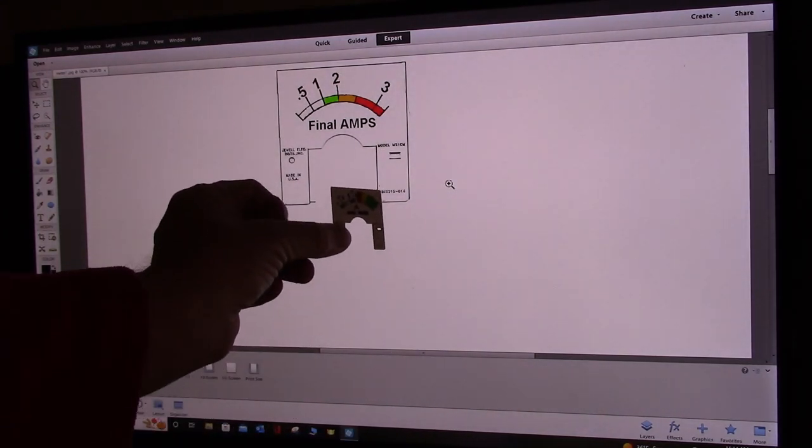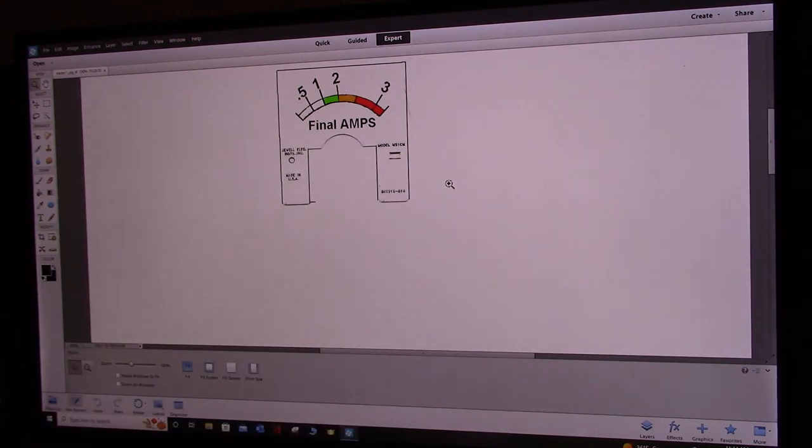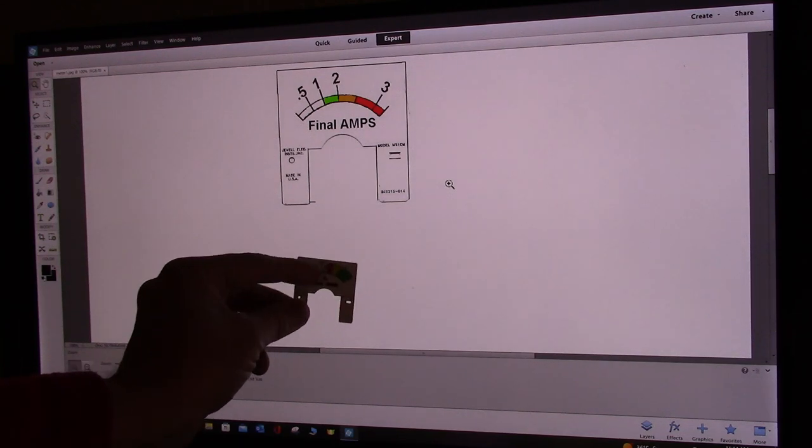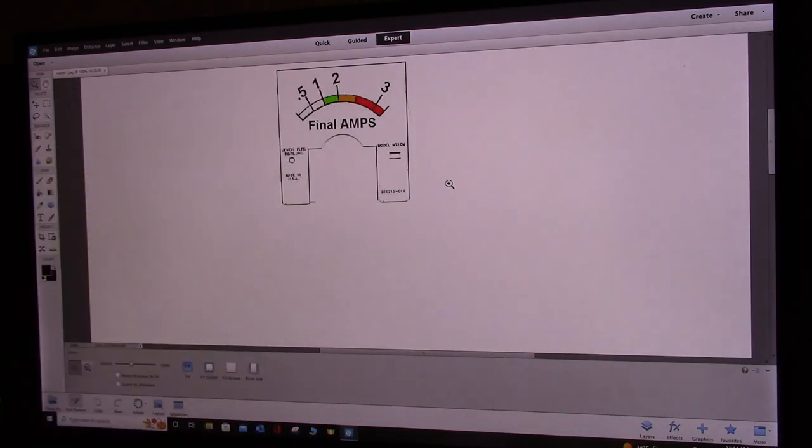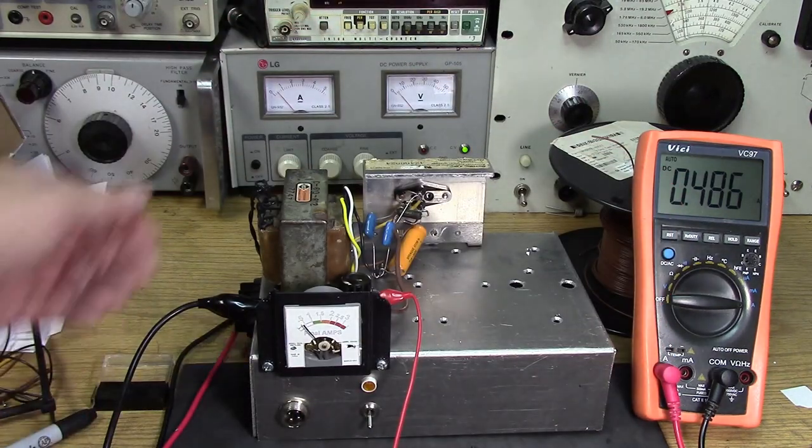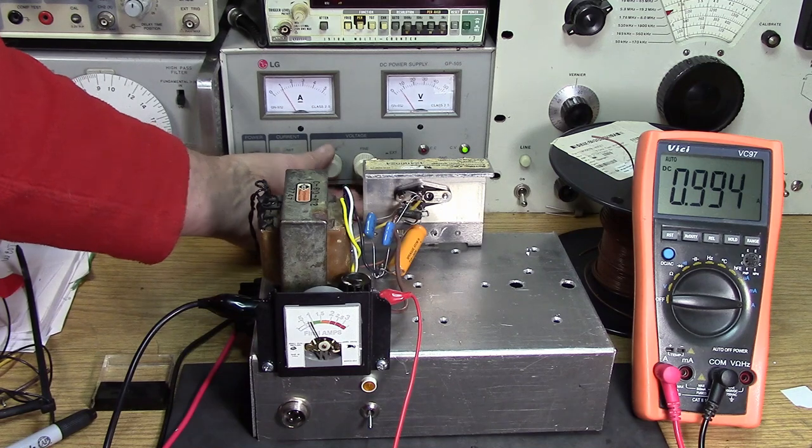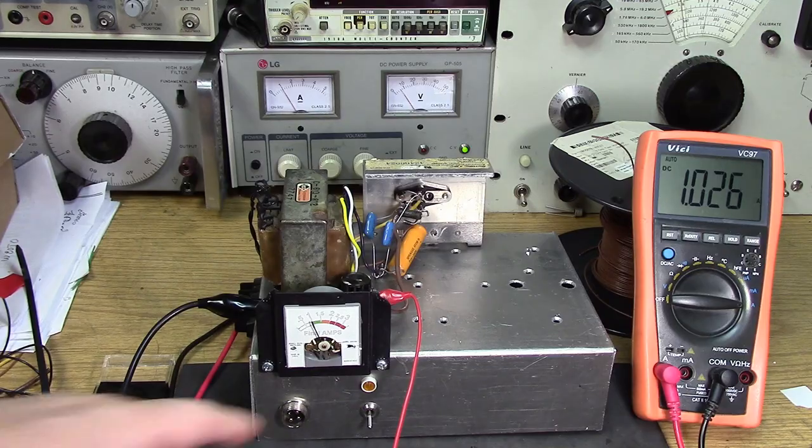I've got kind of a green zone here between 1 and 1.5 amps that I think is going to be the sweet spot. Then we get into higher current - possibly something's running away. First I scanned the original meter, then in Photoshop I made my own meter, put the colors in, printed it on cardstock, and double-side taped it to the front.